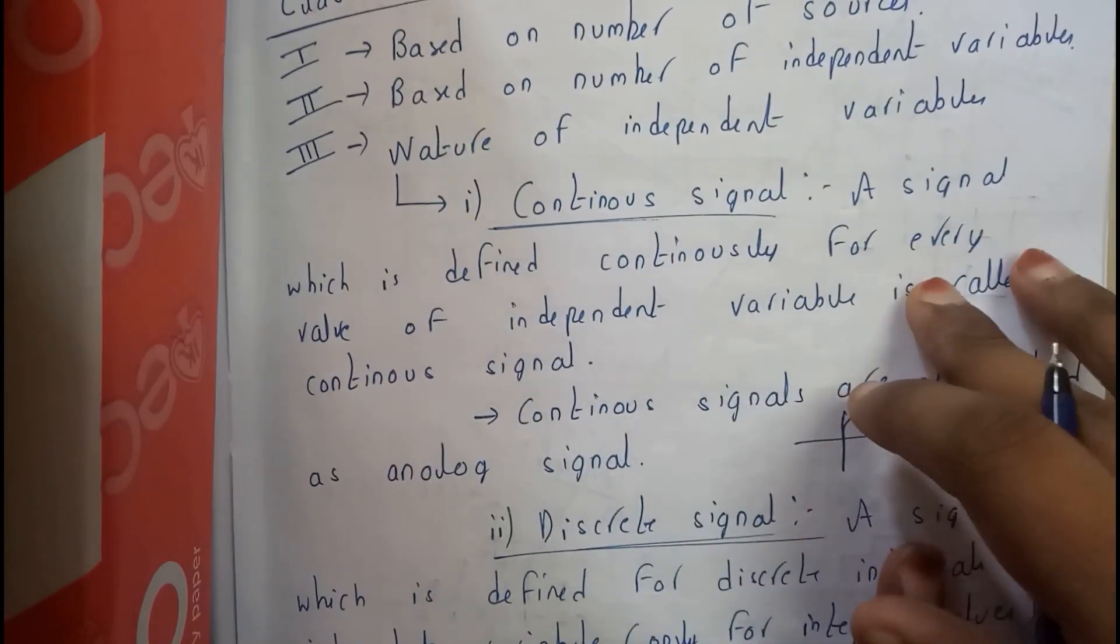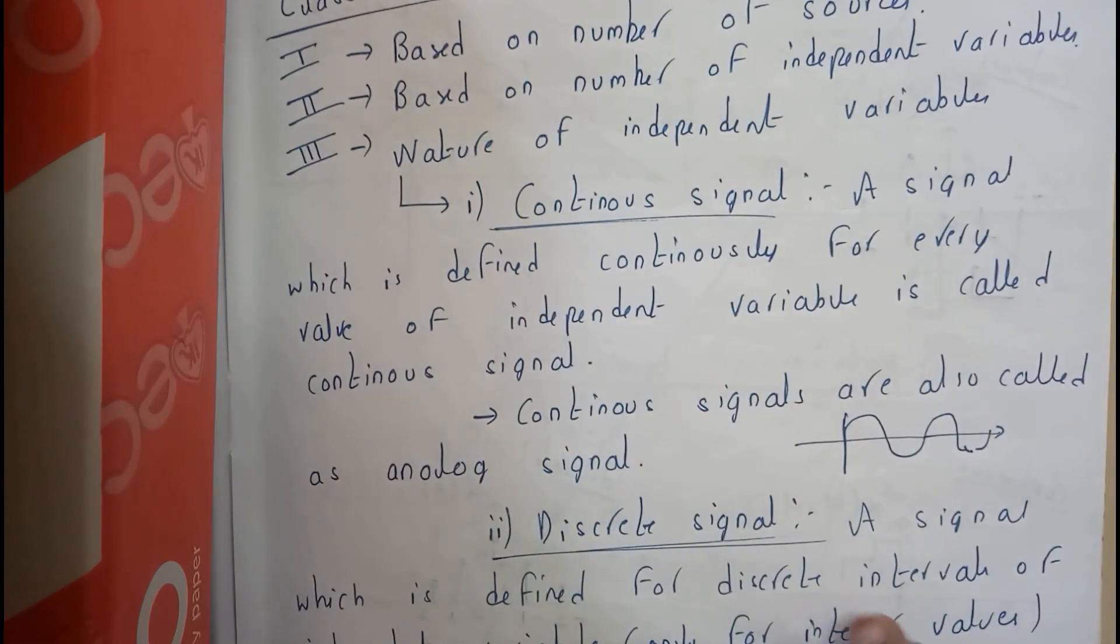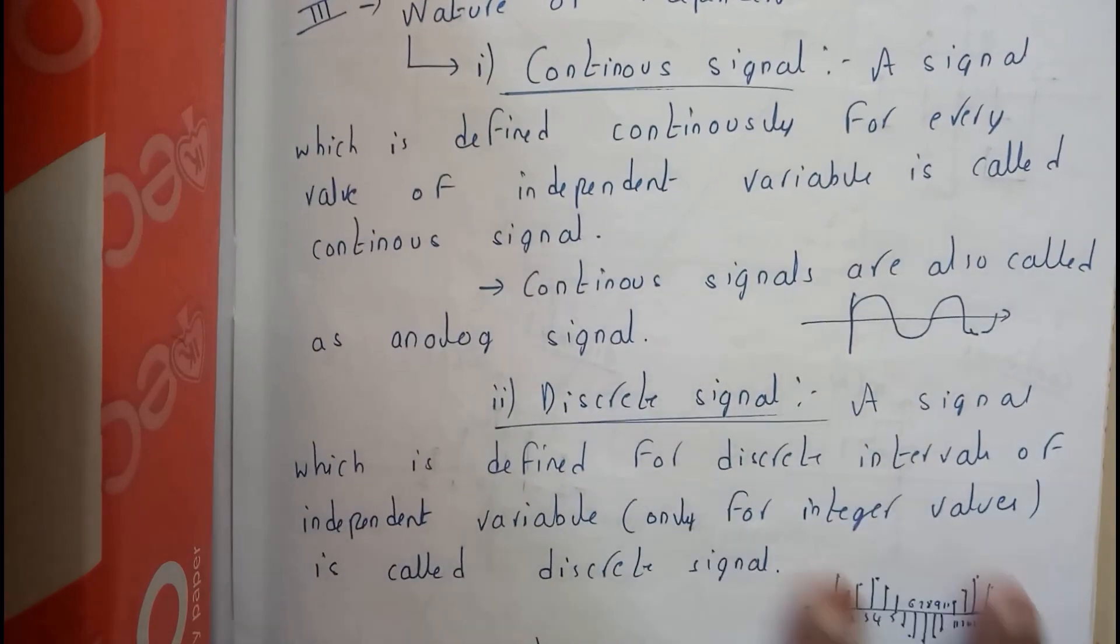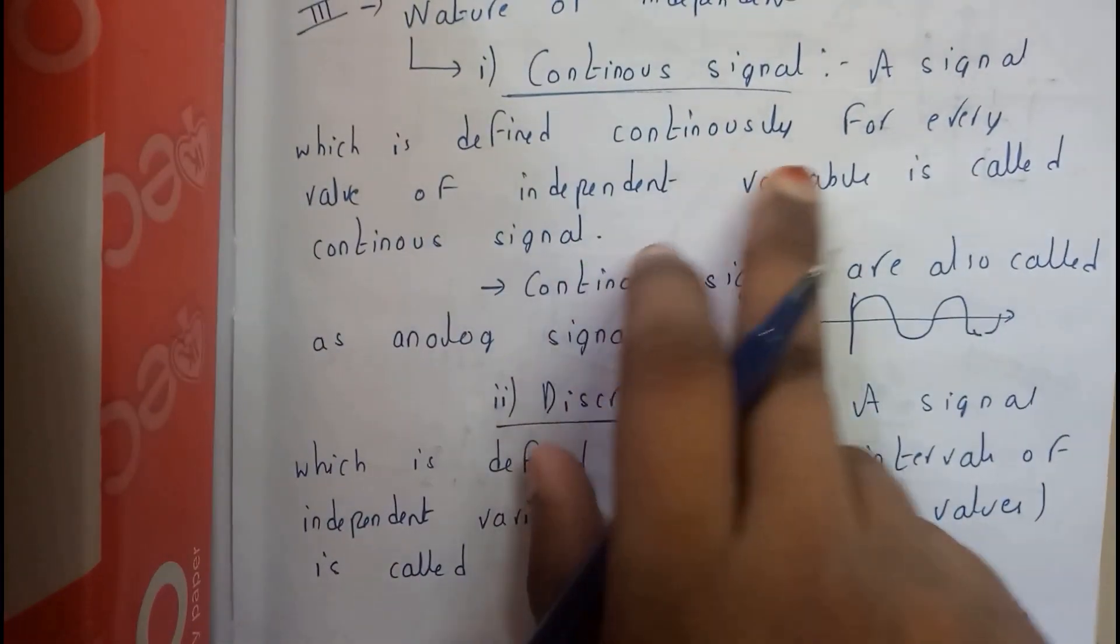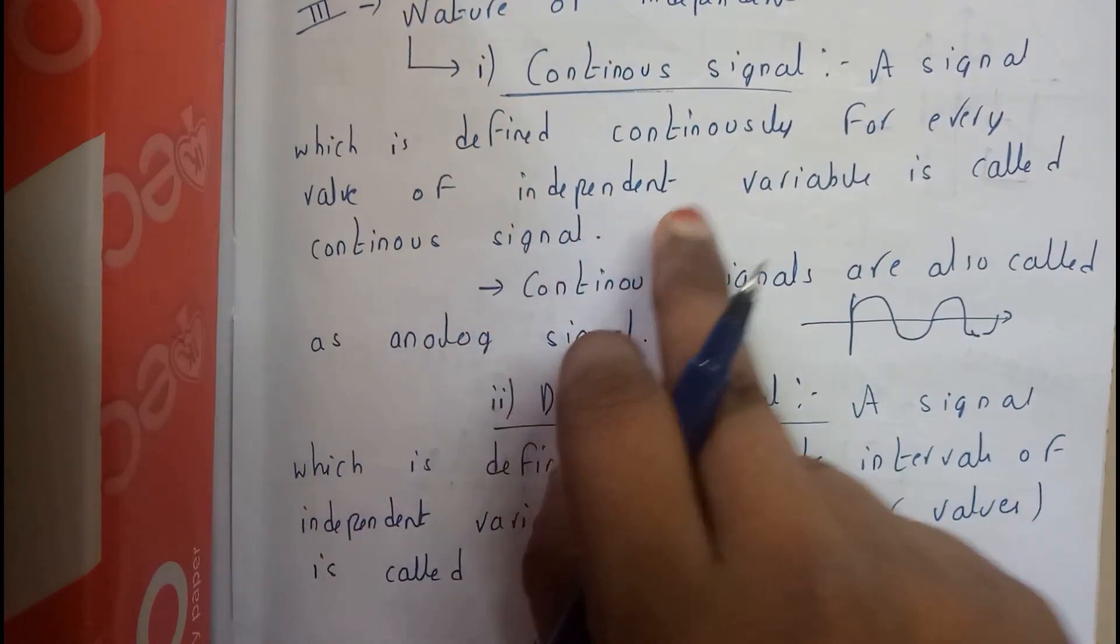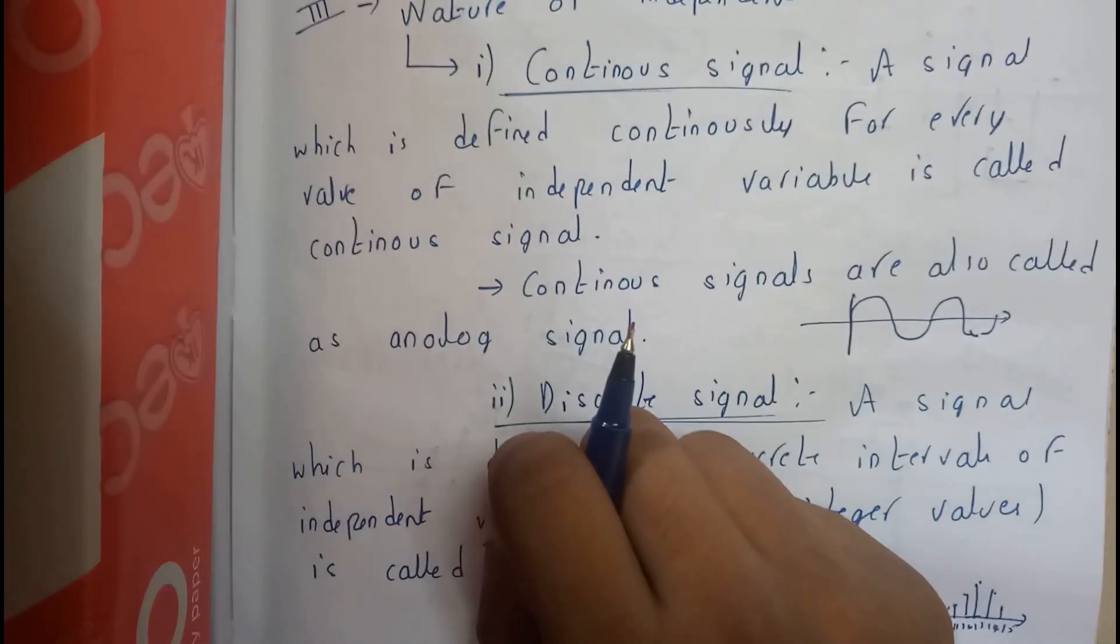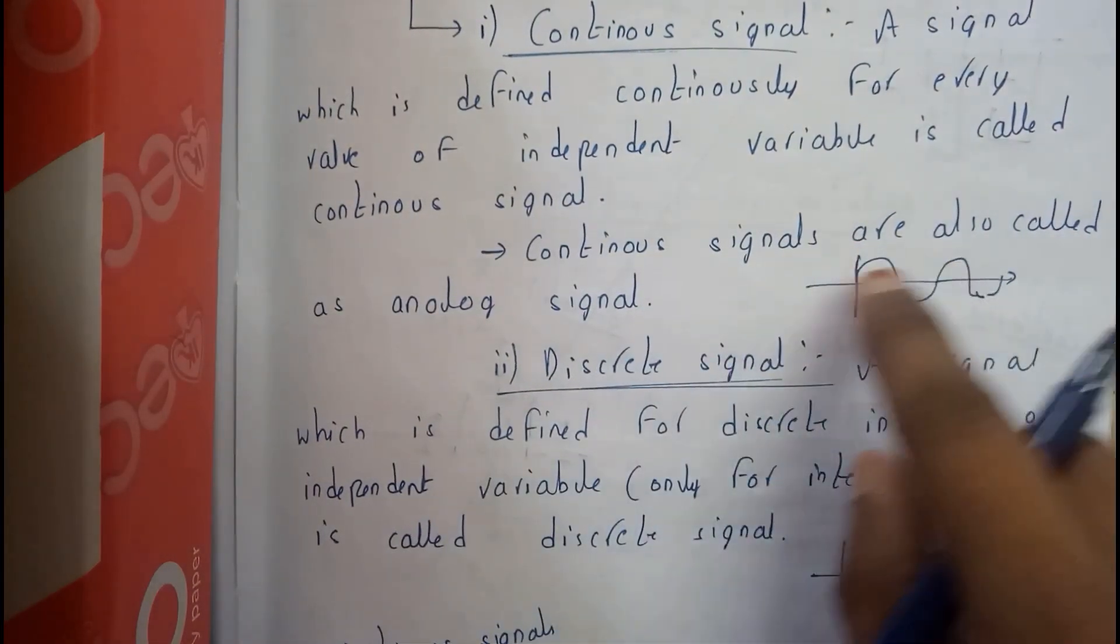The third case is nature of independent variables. These signals are divided into continuous and discrete signals. A signal which is defined continuously for every value of independent variable is known as continuous signal. Continuous signals are also called analog signals. This is the way they represent it.